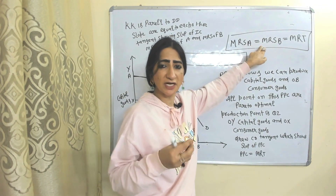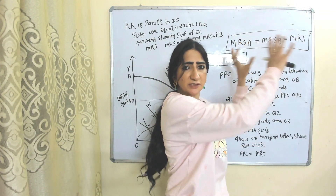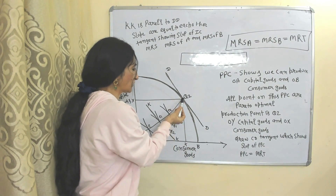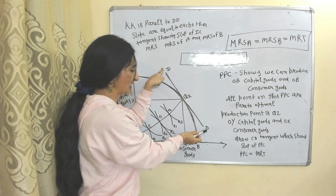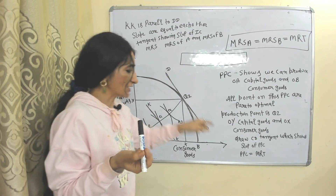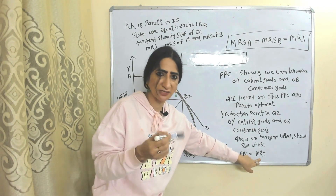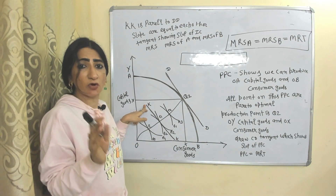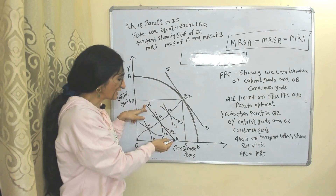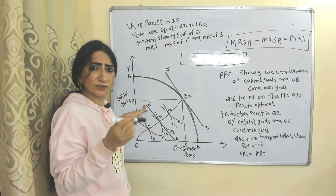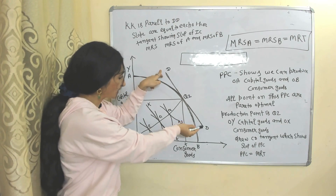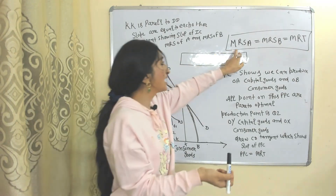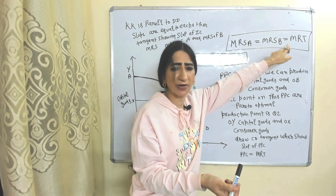The Pareto optimality condition is: marginal rate of substitution of A equals marginal rate of substitution of B, which equals the marginal rate of transformation. Suppose our production point is Q2. We draw tangent DD to show the slope of the production possibility curve, which equals the MRT. We also draw tangent KK to show the slope of the indifference curve, which equals the MRS. KK is parallel to DD, meaning both slopes are equal — MRS of A equals MRS of B equals MRT.